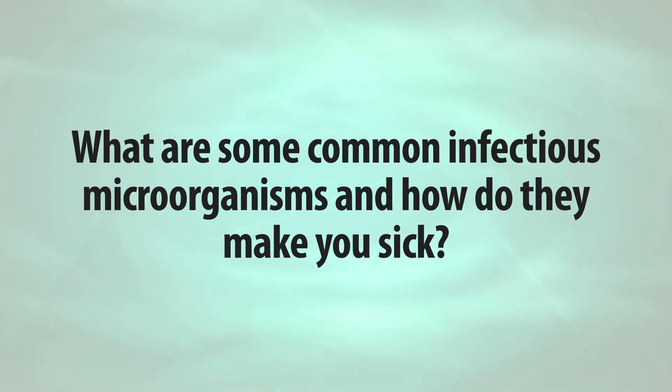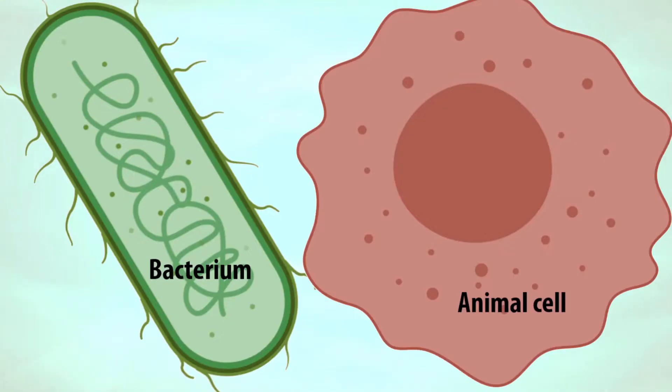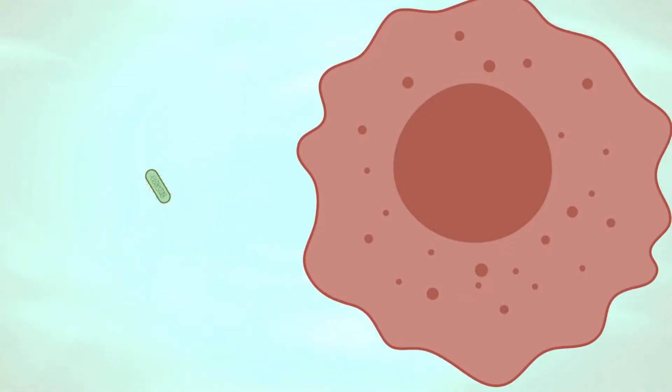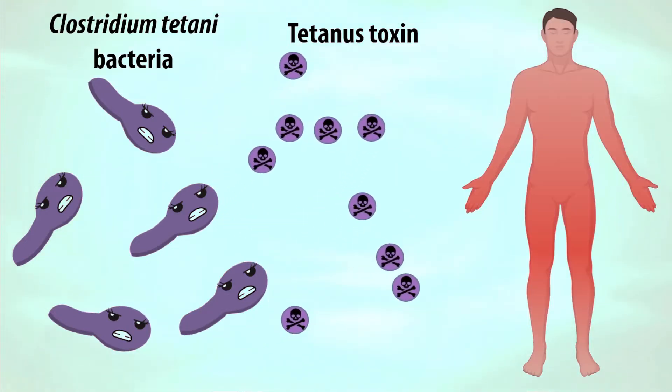What are some common infectious microorganisms and how do they make you sick? Bacteria are about 10 times smaller than our own cells. The kinds that live on people like warm humid places, and if they grow too much in someone's body they might damage the cells in the area they're infecting. Some bacteria squirt out toxins that can harm us.